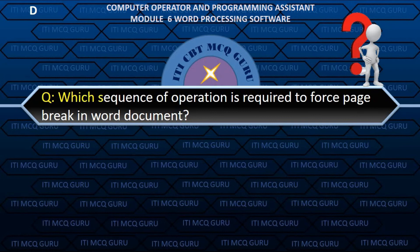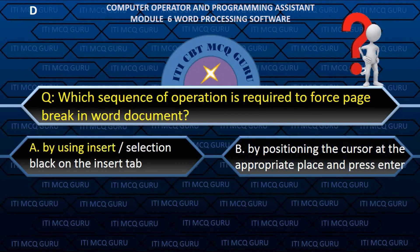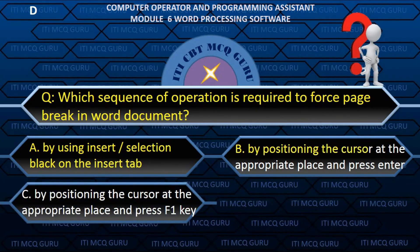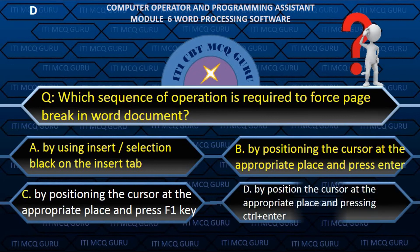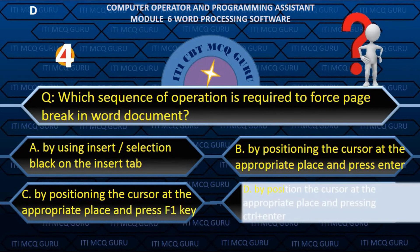Which sequence of operations is required to force a page break in a Word document? D. By positioning the cursor at the appropriate place and pressing Ctrl plus Enter.